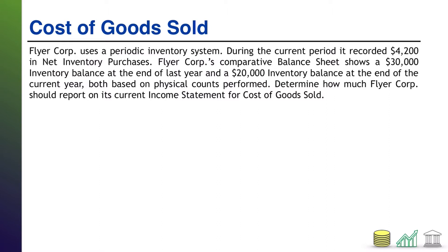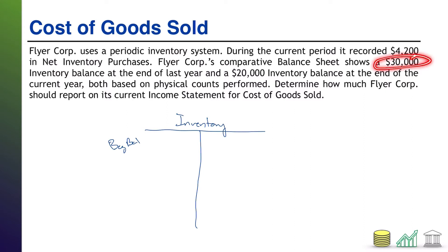All right, welcome back. When we think about cost of goods sold in a periodic inventory system, we have to take into consideration that we are not tracking cost of goods sold with every single sale that is made. Instead, we have to do a little bit of an analysis of the inventory ledger. Specifically, what we care about is how much inventory did we start with — the beginning balance. In this case, the beginning balance is $30,000, which was the inventory balance at the end of last year. Anything you end with the year before is what you start with in the current year.